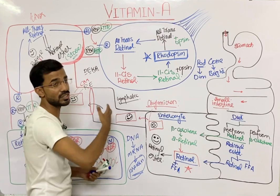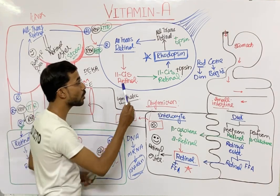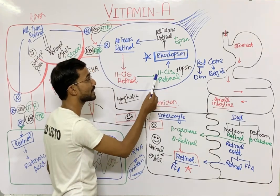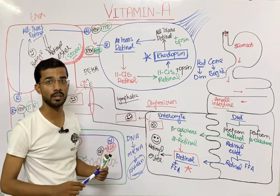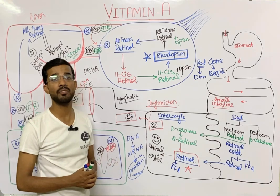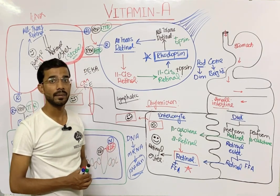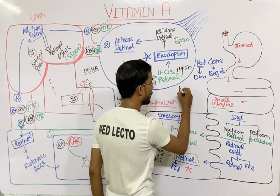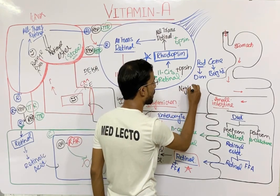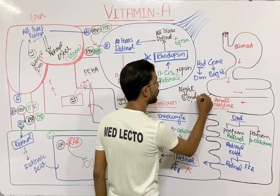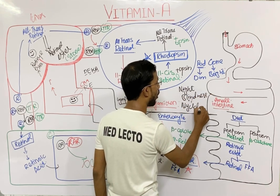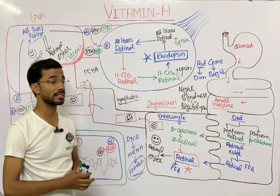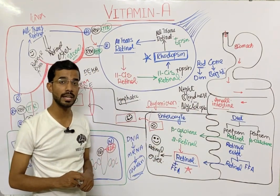If there is a deficiency of Vitamin A, there is no 11-cis retinal, and therefore no rhodopsin can form. That person will not be able to see in dim light — a condition called night blindness, or nyctalopia.